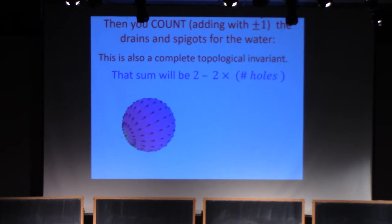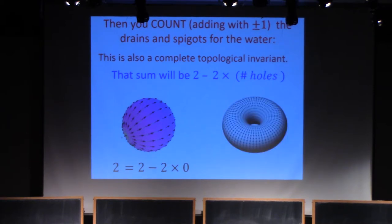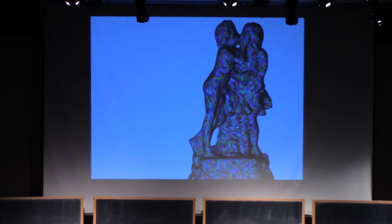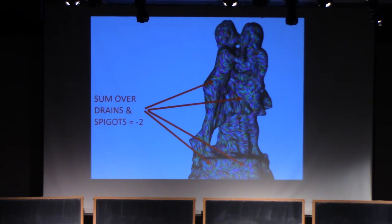Let's check that. Here is water flowing on a sphere. There's one drain and one spigot, and they both contribute plus one, so I get two, which is indeed two minus two times the number of holes. Here is water flowing on the surface of a donut, and there are no drains and spigots, so we get zero, and that is indeed two minus two times the number of holes. Just to show you that the minus signs are very important here, consider this two-dimensional surface. If you're not distracted by other things, you might consider putting a vector field on that surface, as the authors of this picture have done, and you will get minus two when you sum over the drains and spigots, and that's indeed two minus two times the number of holes.